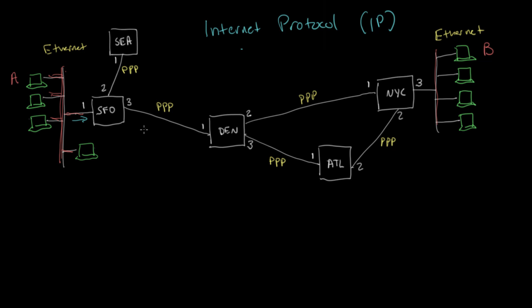And so the process of building that table is called routing. And the process of actually using the table to forward packets is called forwarding.